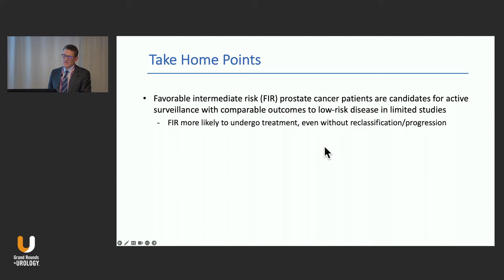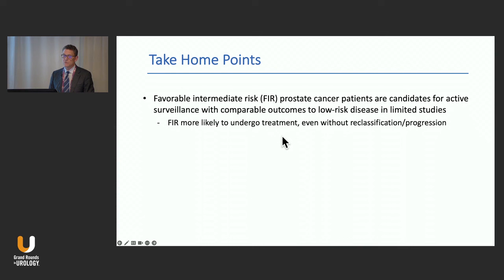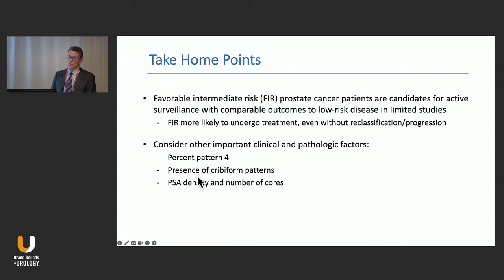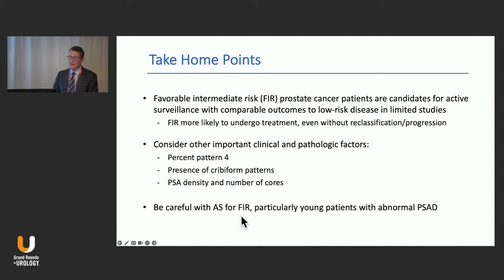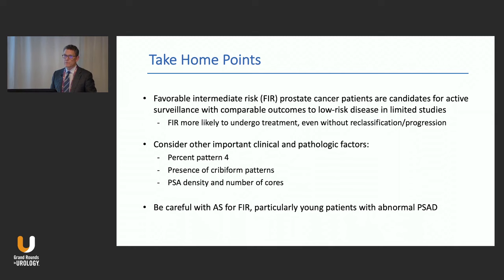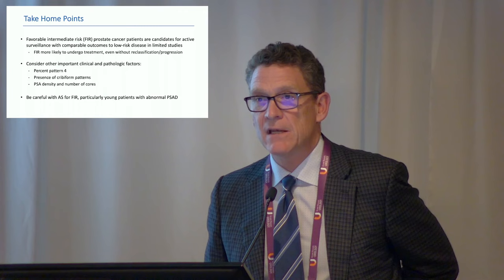Take-home points: favorable intermediate risk prostate cancers are candidates for active surveillance and have comparable outcomes to low-risk patients in limited studies with short follow-up. However, favorable intermediate risk patients are more likely to undergo treatment even without reclassification or progression. Consider percent of pattern 4, percent of cribriform pattern, PSA density, and number of cores. Be careful with active surveillance for favorable intermediate risk patients. In my practice, if a patient wants to delay treatment for an interval for some reason, I'm open to it — but as a management strategy to avoid intervention, I guide patients away from it. The only favorable intermediate risk category where I am very comfortable with surveillance is grade group 1 with favorable PSA density and PSA over 10.